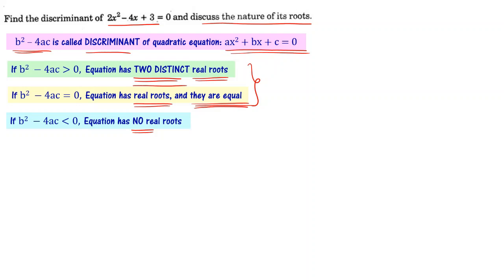b² minus 4ac is called the discriminant of quadratic equation ax² plus bx plus c equal to 0. For the given equation 2x² minus 4x plus 3 equal to 0, we need to find the discriminant value b² minus 4ac, and then based on that, discuss the nature of its roots.